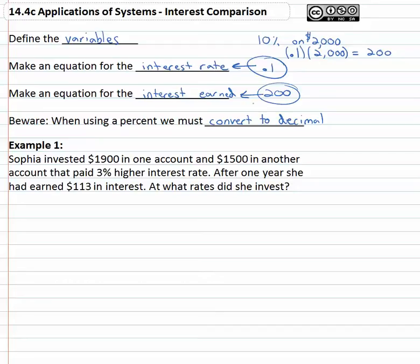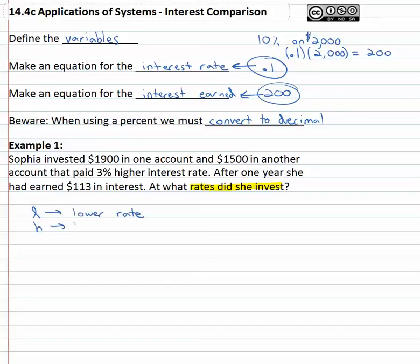Sophia is going to invest nineteen hundred dollars in one account and fifteen hundred dollars in an account that pays three percent higher interest rate. After one year she earns a hundred thirteen dollars. What rates did she invest at? We need two variables because she invested at two different rates — one lower, one three percent higher. Let's call them l and h: l for the lower interest rate and h for the higher interest rate.